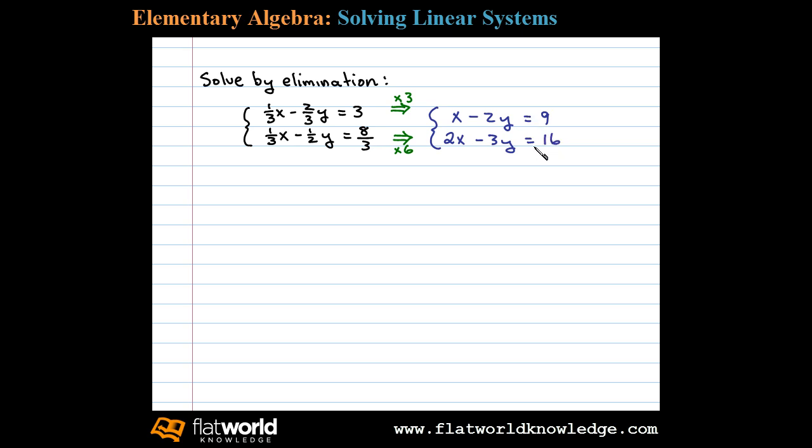We now have an equivalent system with integer coefficients. To solve by elimination, we can see that if we multiply the first equation by negative 2, the variable x will eliminate. Negative 2 times x is negative 2x, negative 2 times negative 2y leaves us with plus 4y, equals negative 2 times 9, which is negative 18.